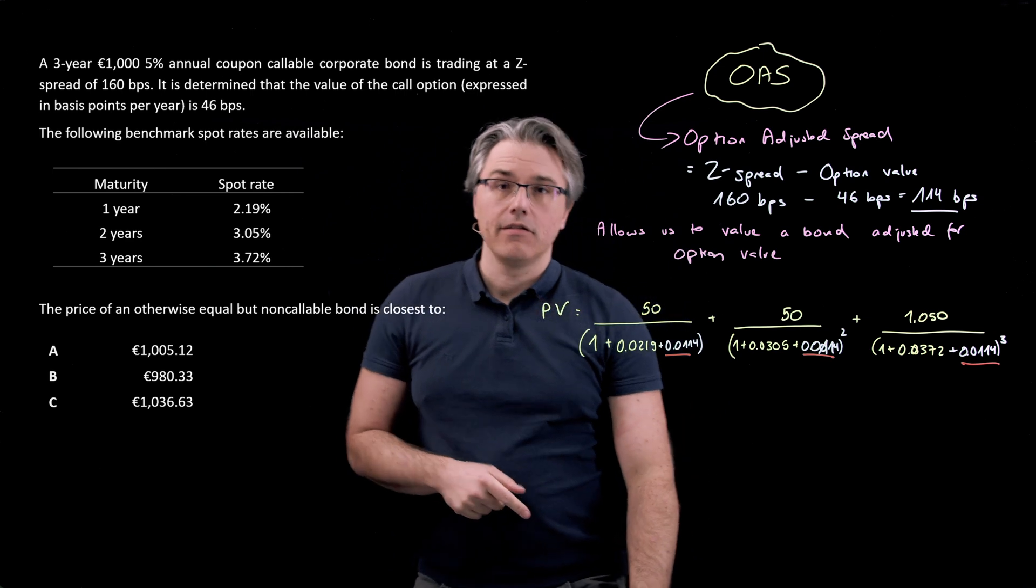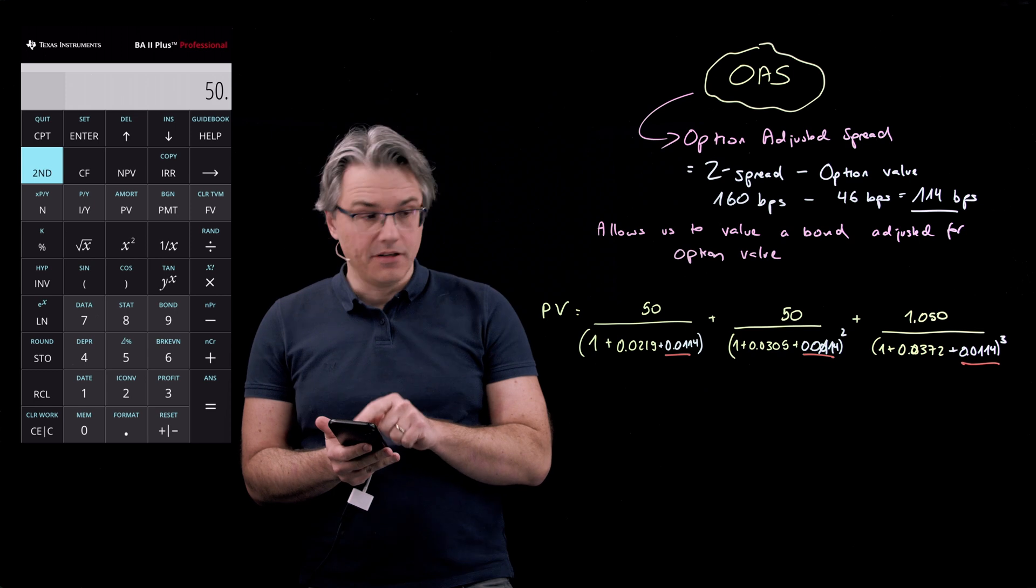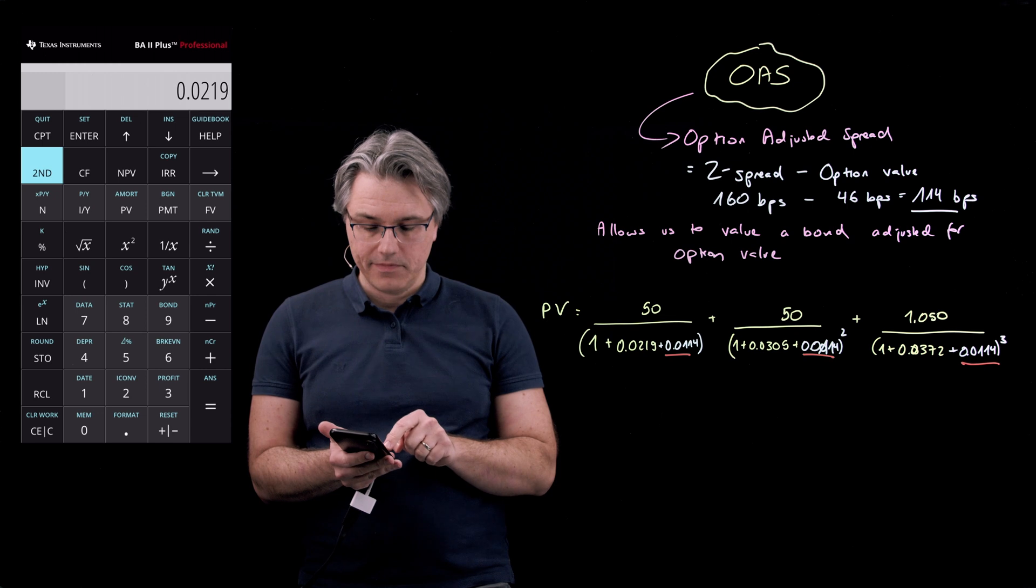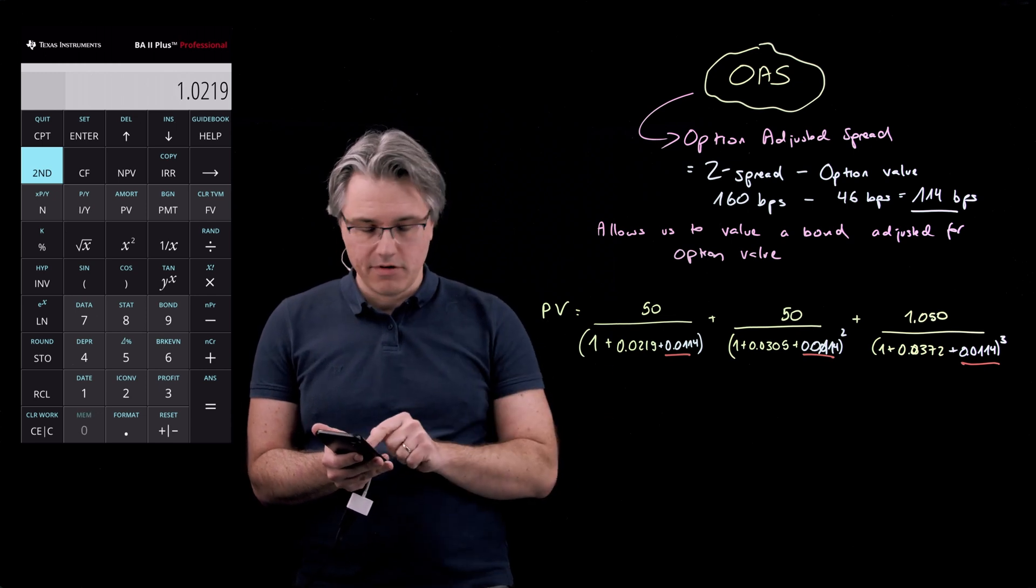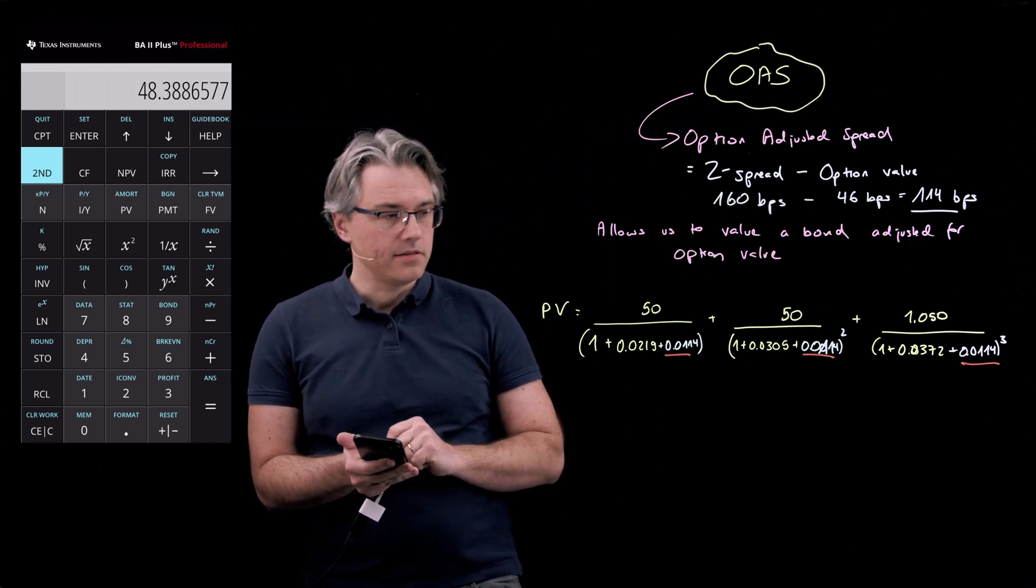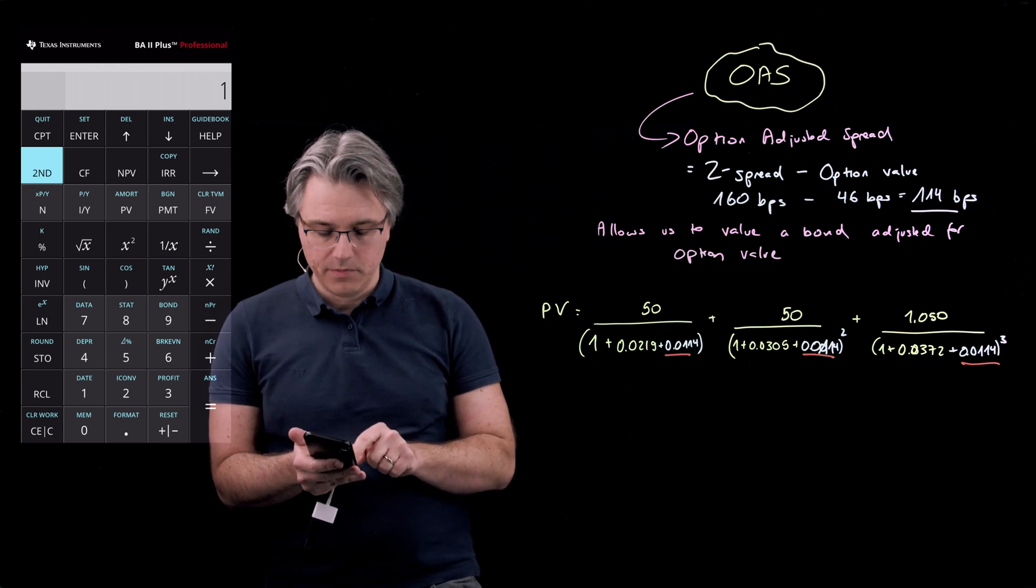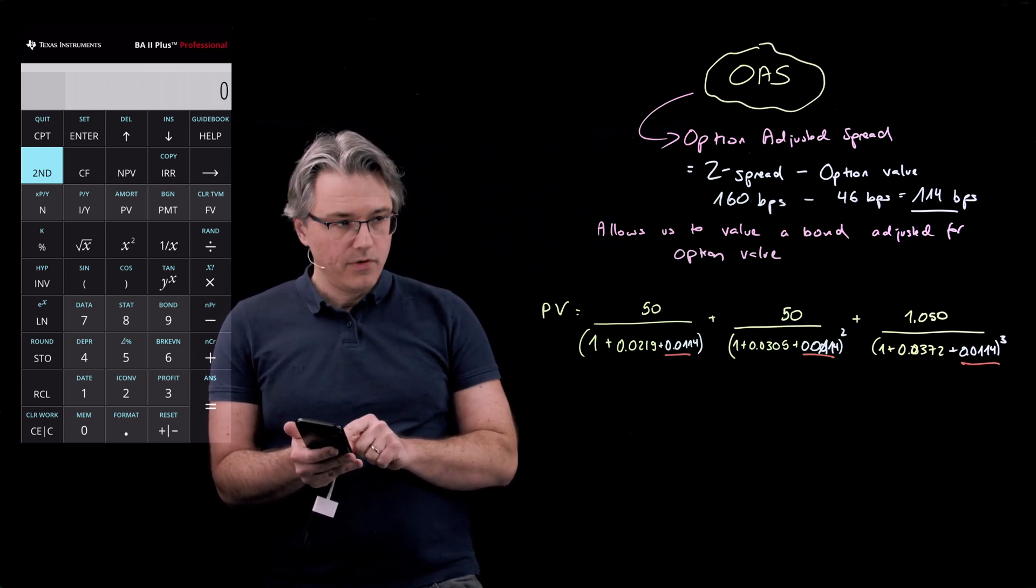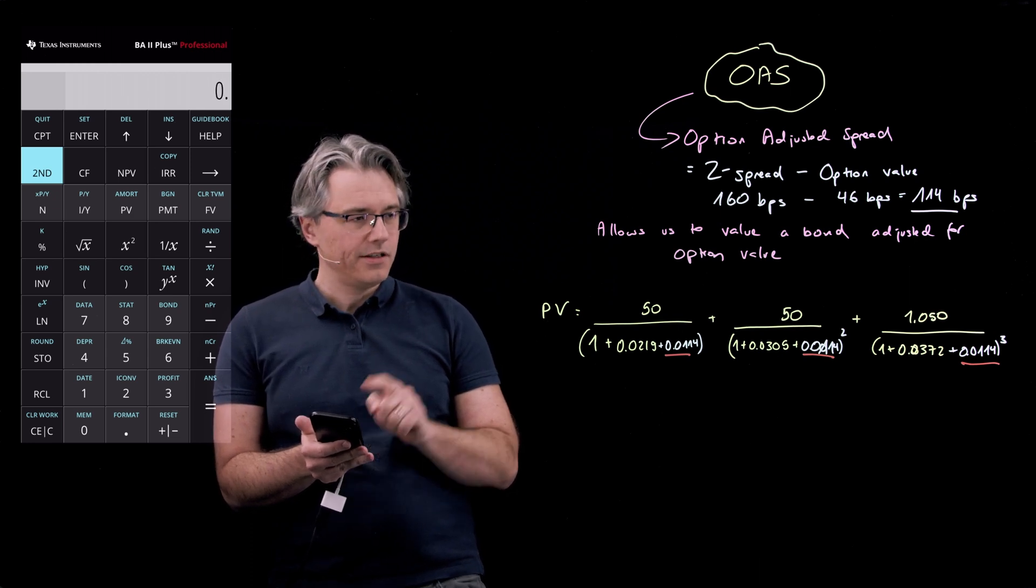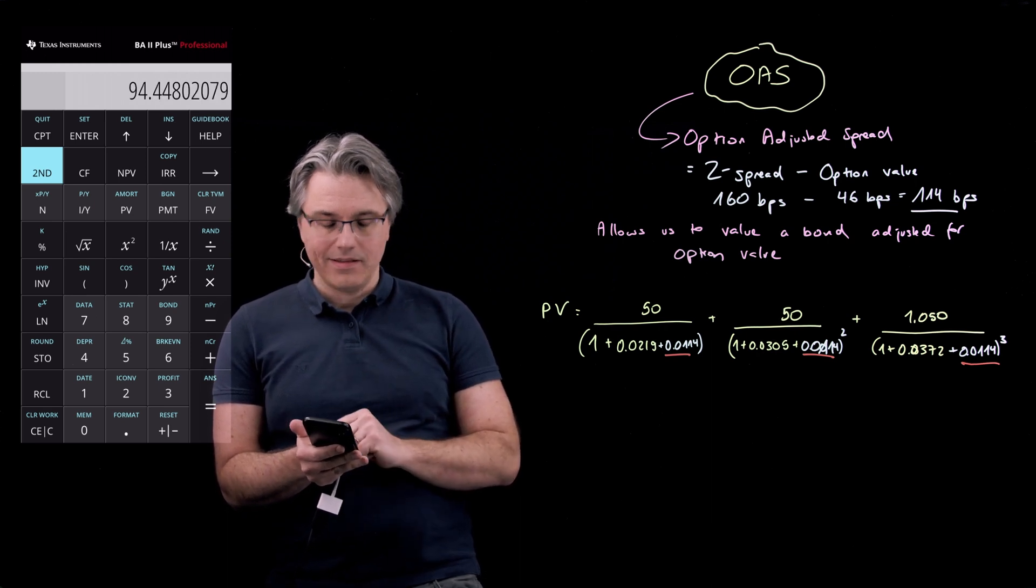Let's get the numbers in from the calculator. 50 divided by, open bracket, 1 plus 0.0219, and on top of this, 0.0114, close bracket, plus the next 50, divided by, open bracket, 1 plus 0.0305, plus 0.0114, have to be careful here, close bracket, square it.